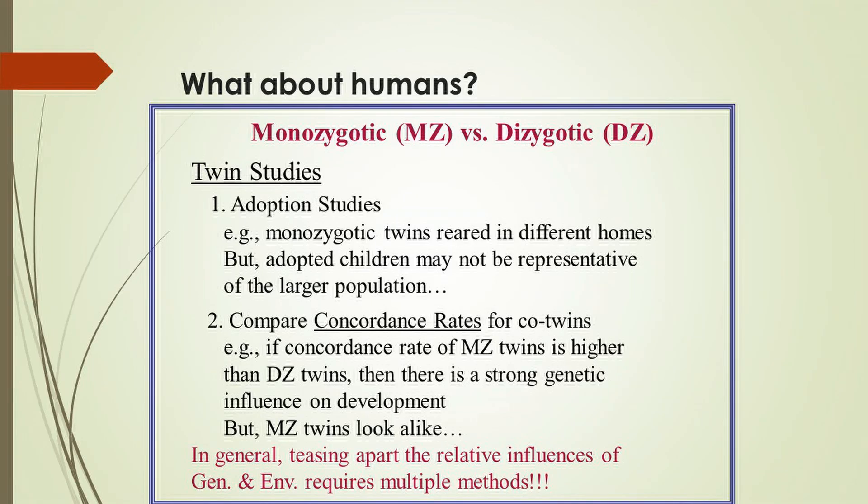Selective breeding allows you to tease apart the relative influence of genetic inheritance and environment on the development of behavior, but you really can't do that with humans. For one thing, it takes too long to have multiple generations, and for another, more important reason, it would be illegal to conduct an experiment of this type with humans.